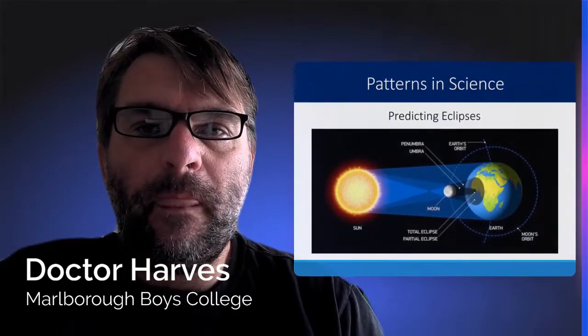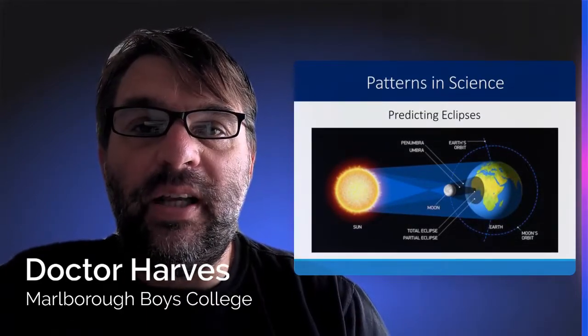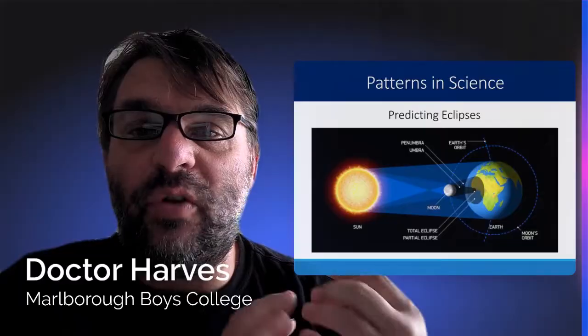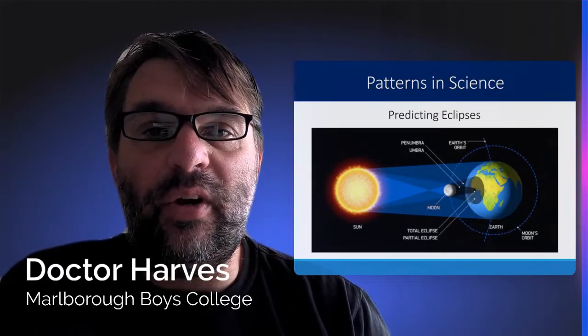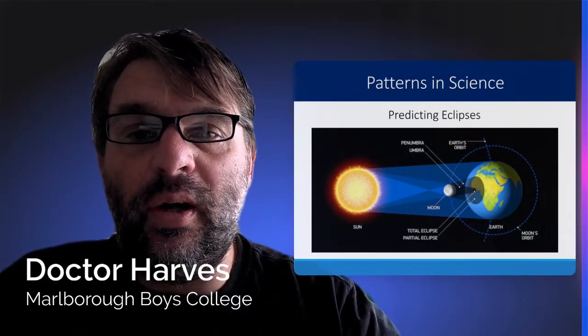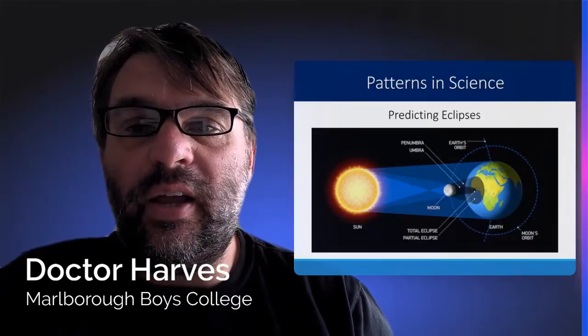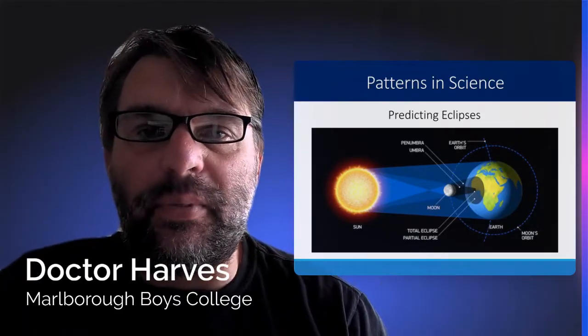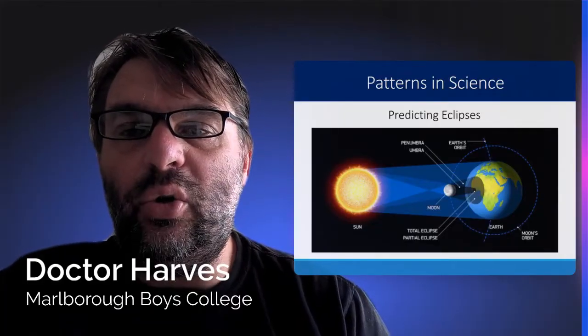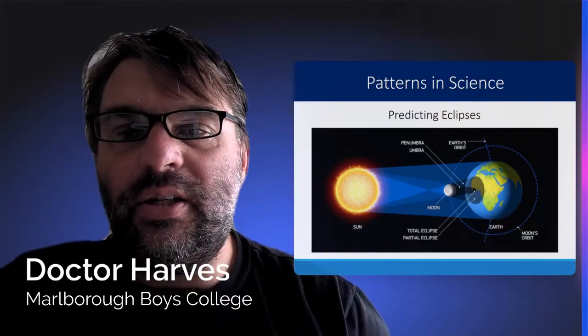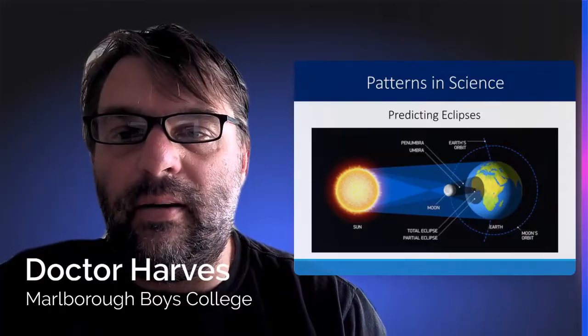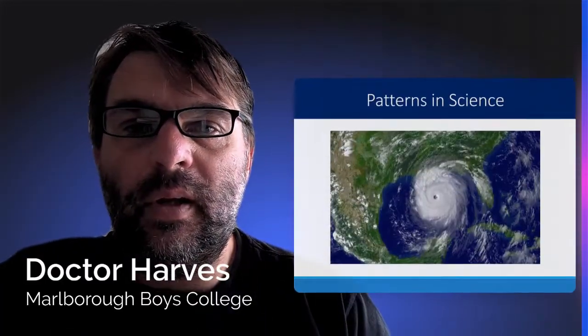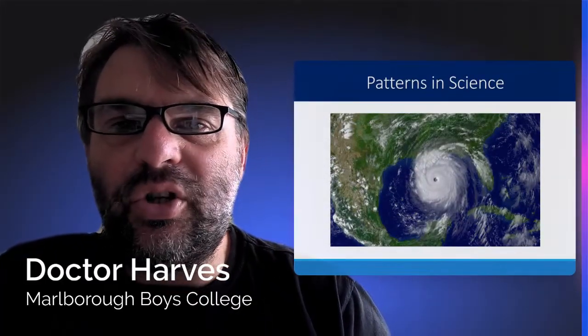You've also got the ability to see patterns in the sky in terms of eclipses. Every now and then the moon moves in front of the earth and in front of the sun as well, creating an eclipse. Early astronomers used these constant patterns to then build predictions and models.